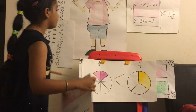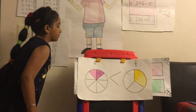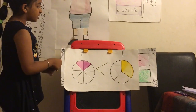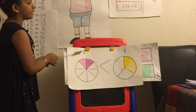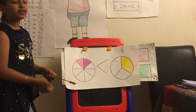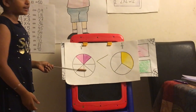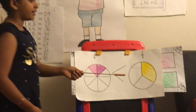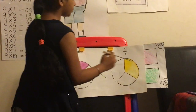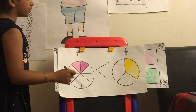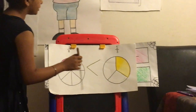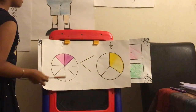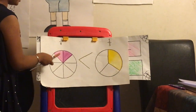Moving on to fraction circles. When the denominator and the numerator are different, this is the strategy that can help you out. The picture clearly shows that one-third is greater than two-eighths.